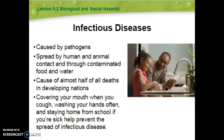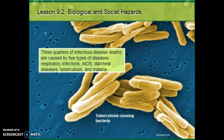Section 9.2 is about biological and social hazards. Infectious diseases are going to be key here. Check out this statistic: three-fourths of infectious disease deaths are caused by five types of diseases.